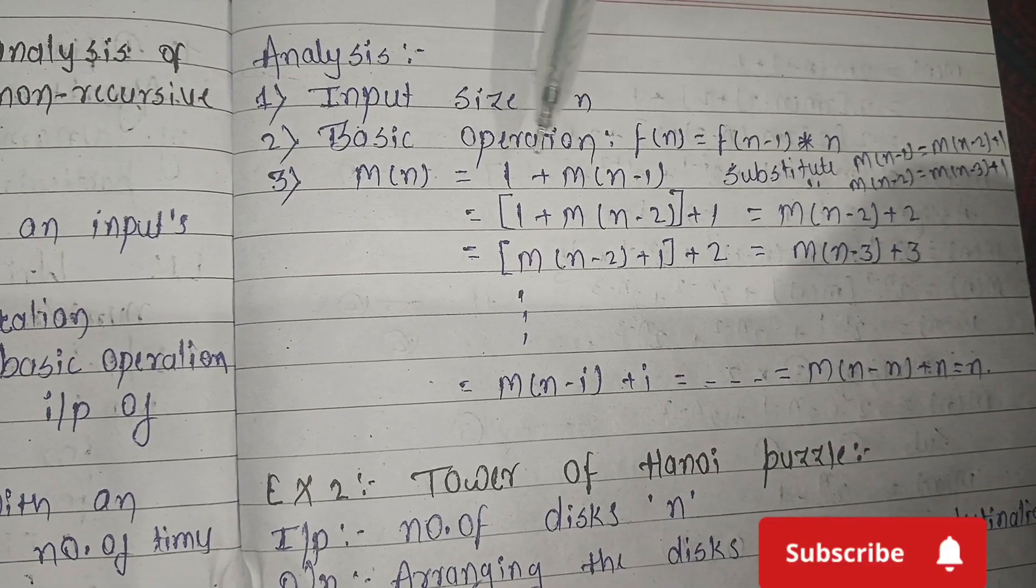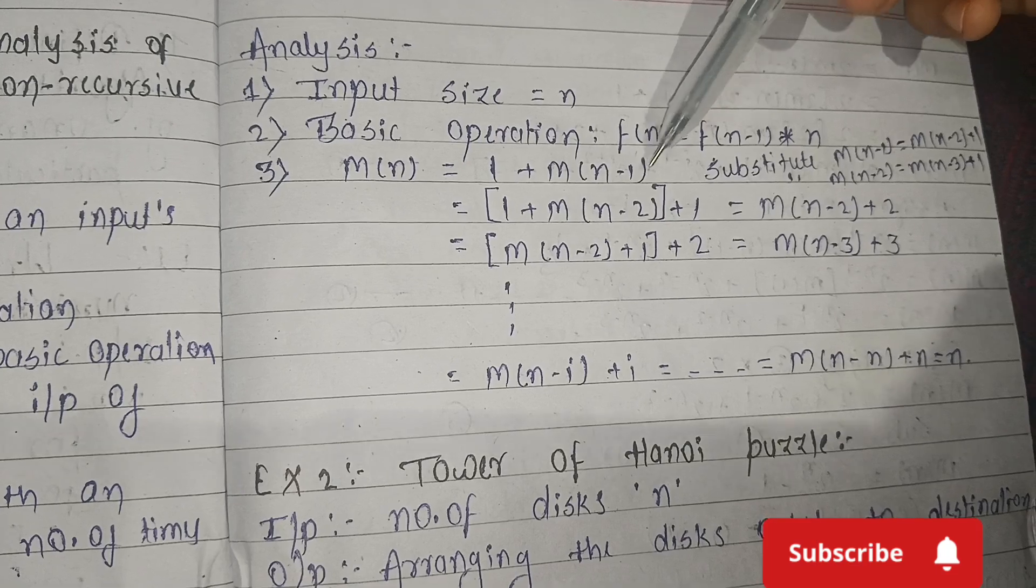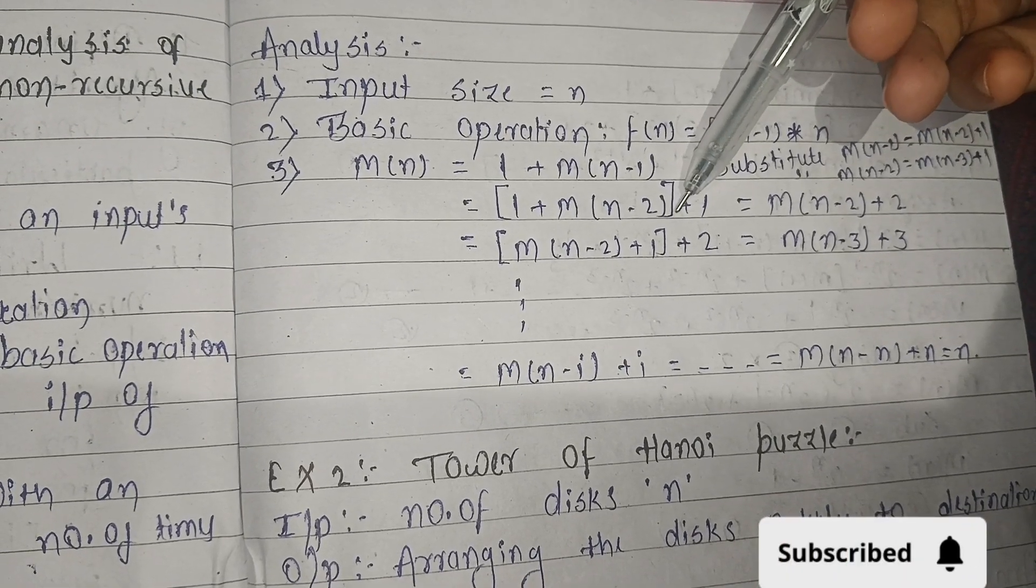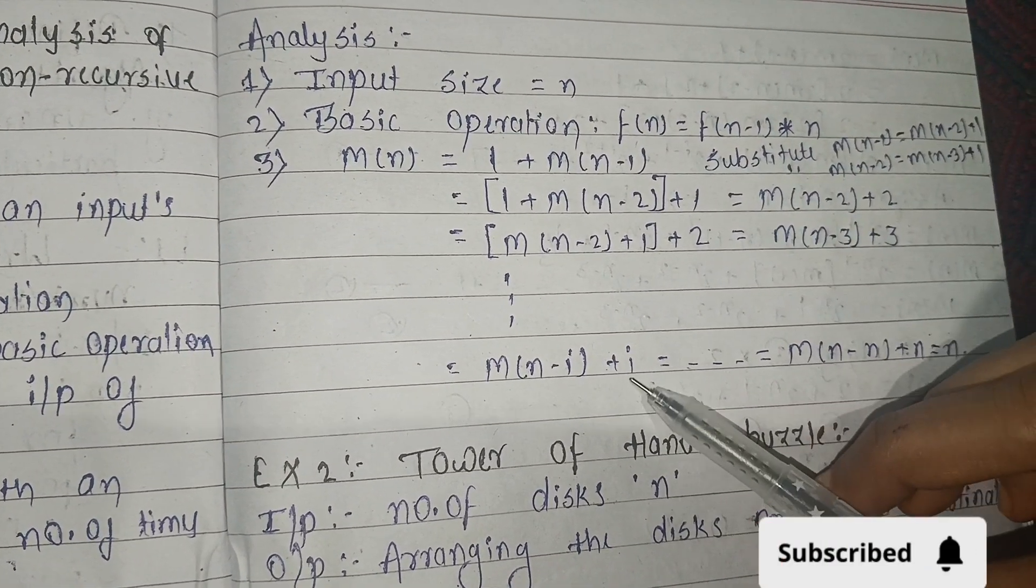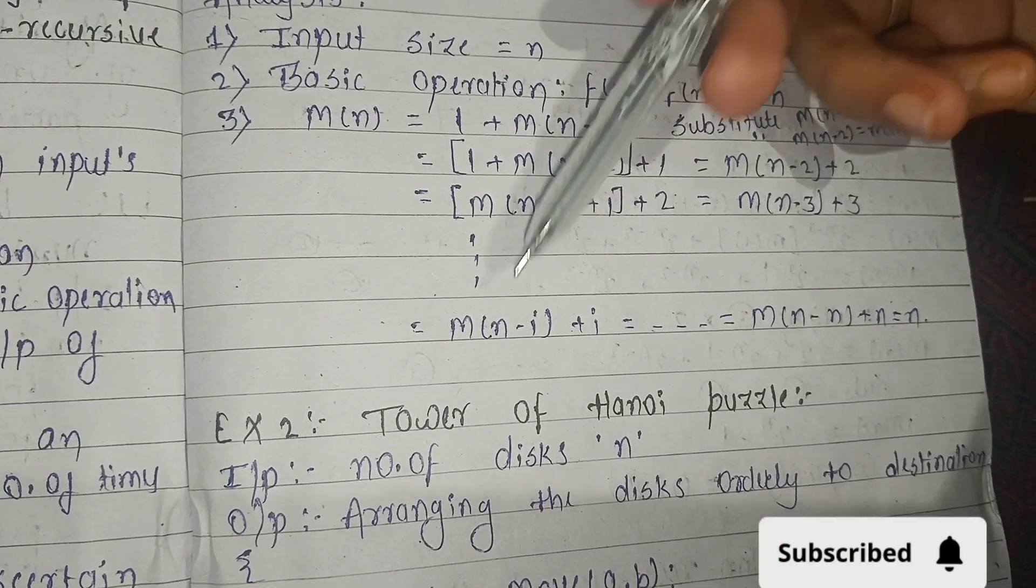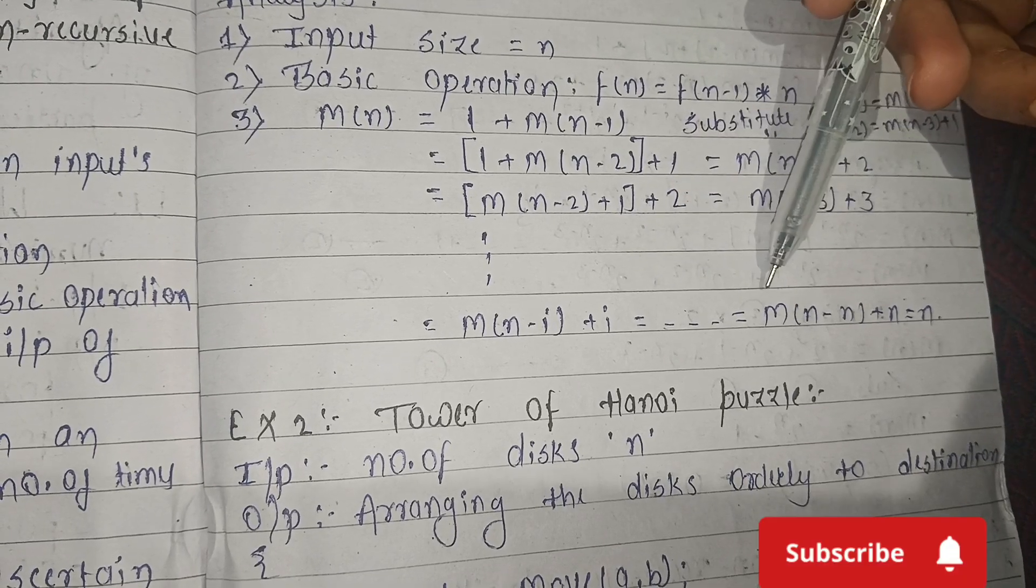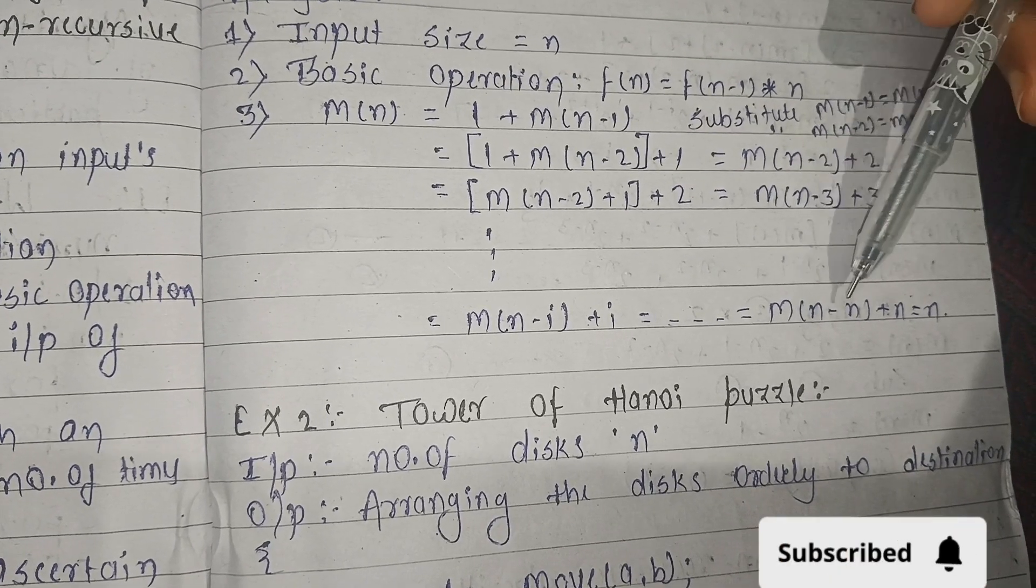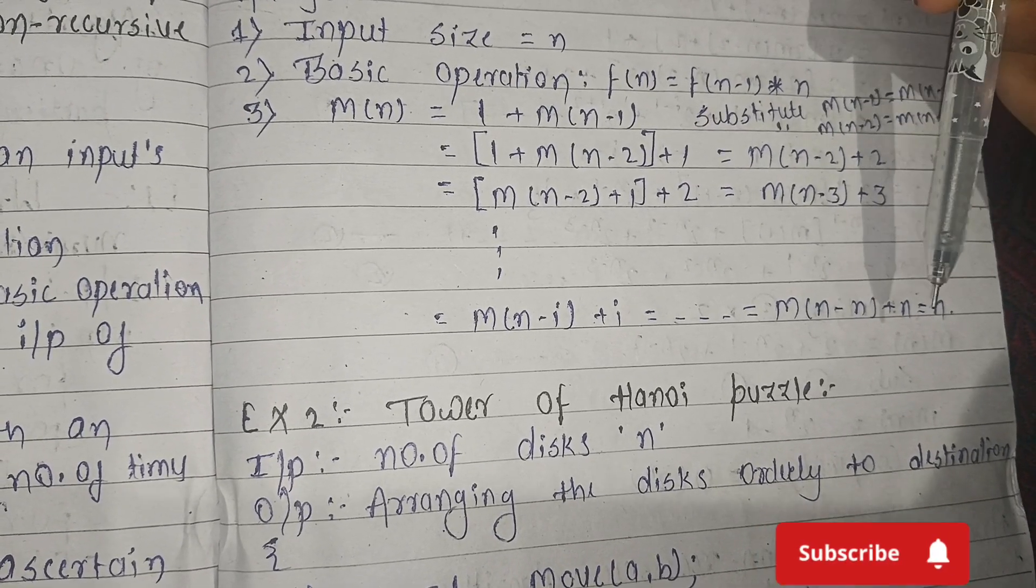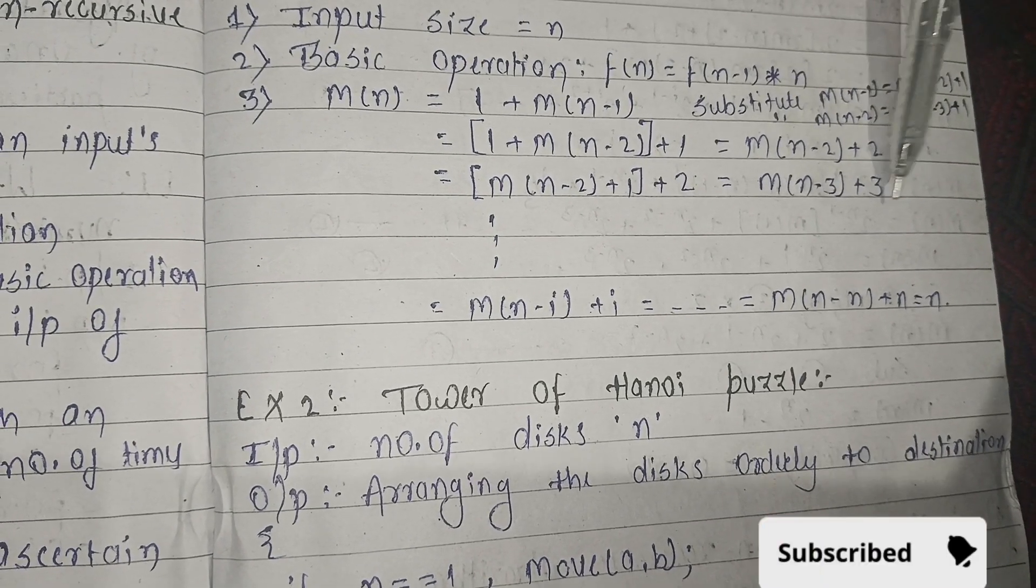Now the value of m(n) when n=2 will be 1. Substitute n=1 and substitute, and so on, the value of i will be found. So here when n=2, m(n-i+i) = m(n-n+n) = n, so the value is n.